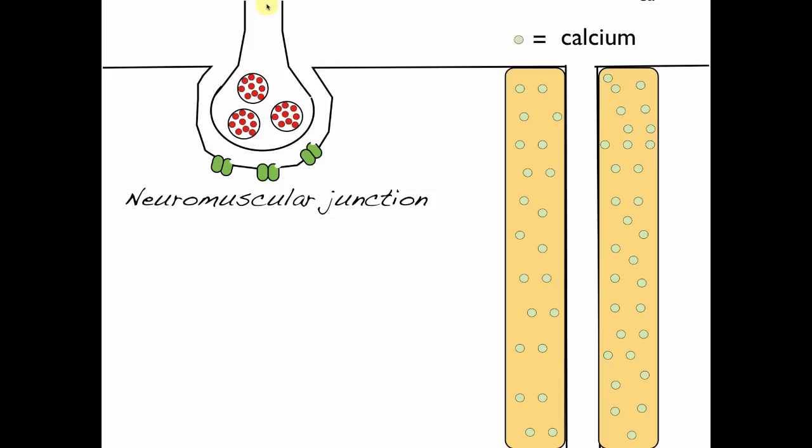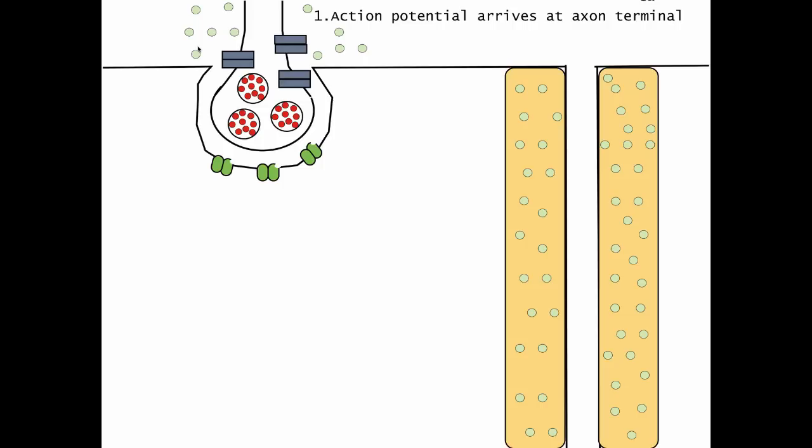Let's start it up here as the action potential arrives at its axon terminal. If you recall from previous videos, within the axon terminal are voltage-gated calcium channels. So that as an action potential arrives at its axon terminal, that is, sodium moves down its electrochemical gradient. This is going to trigger voltage-gated calcium channels to open up.